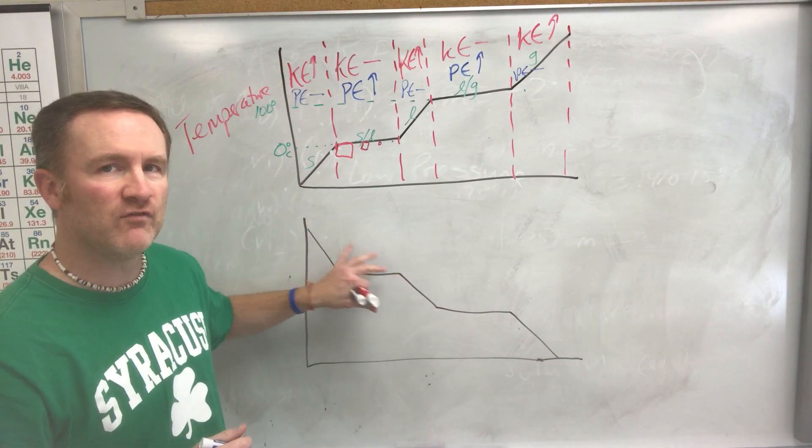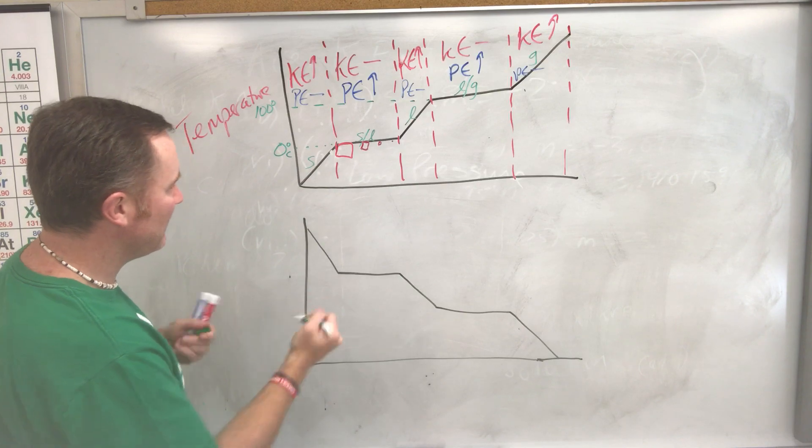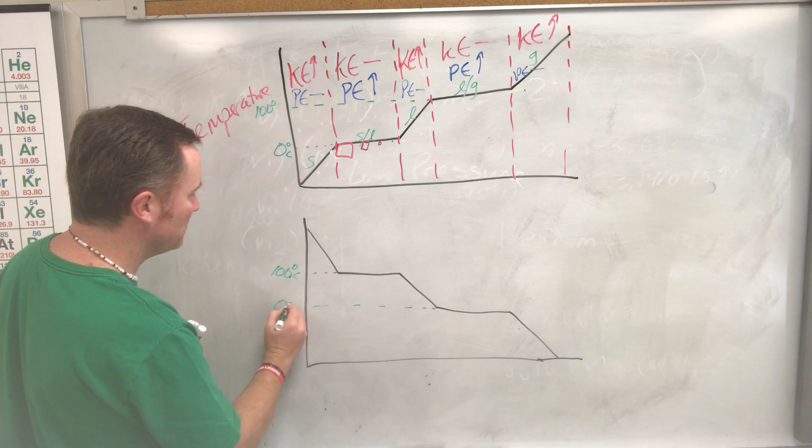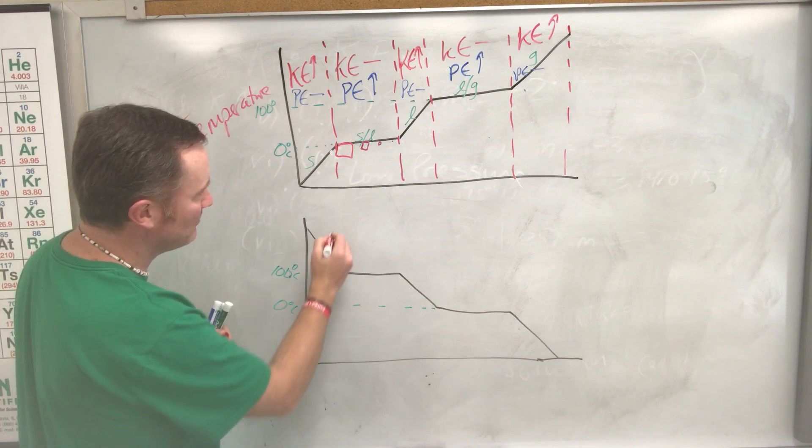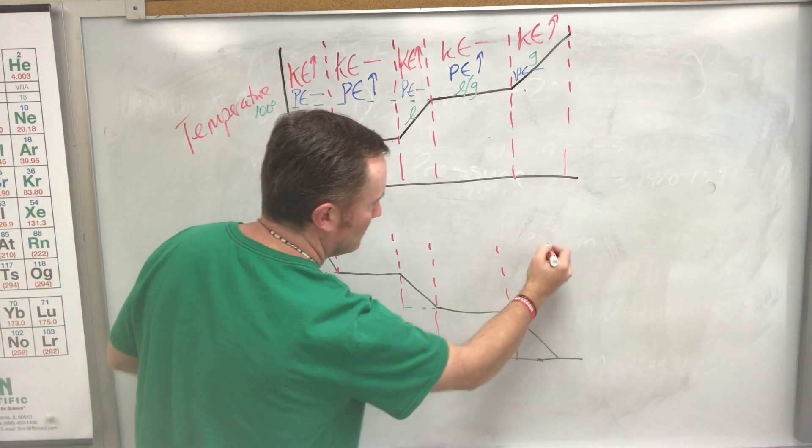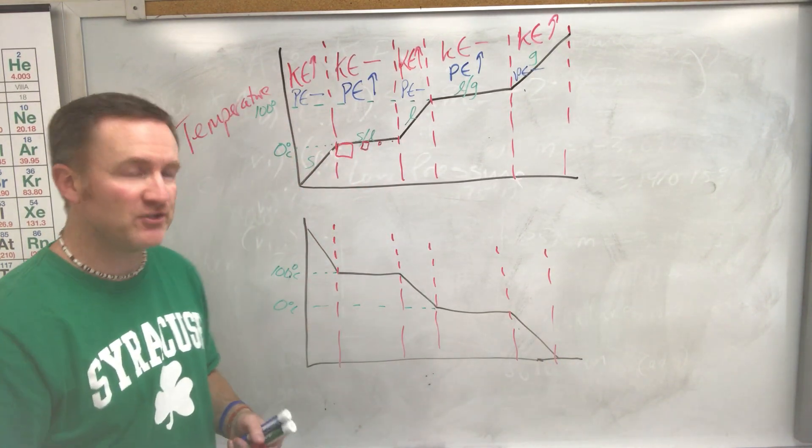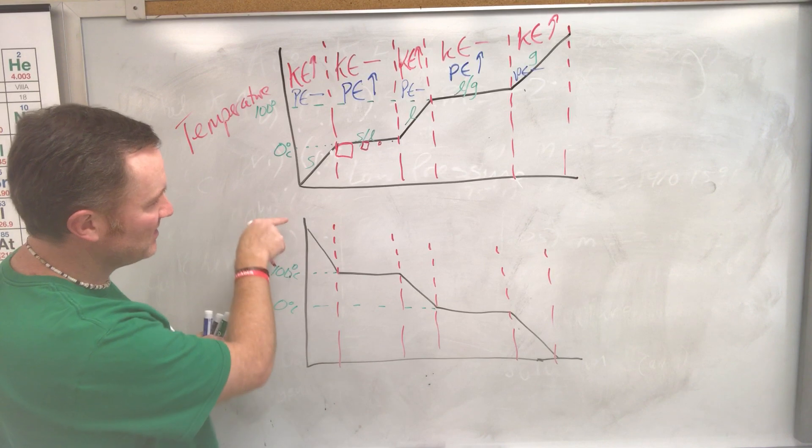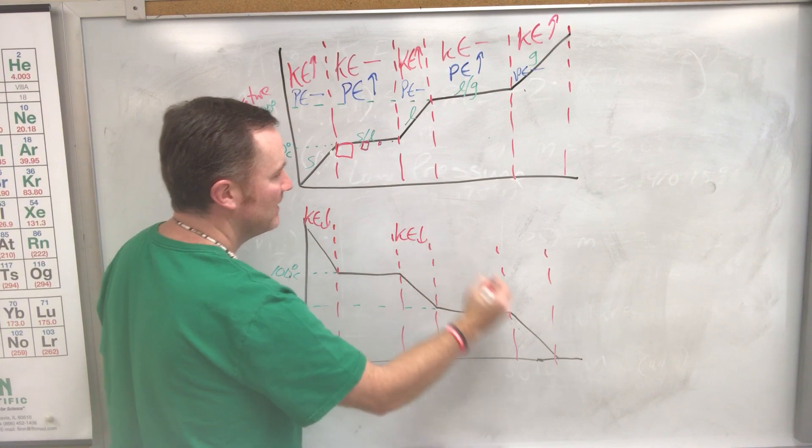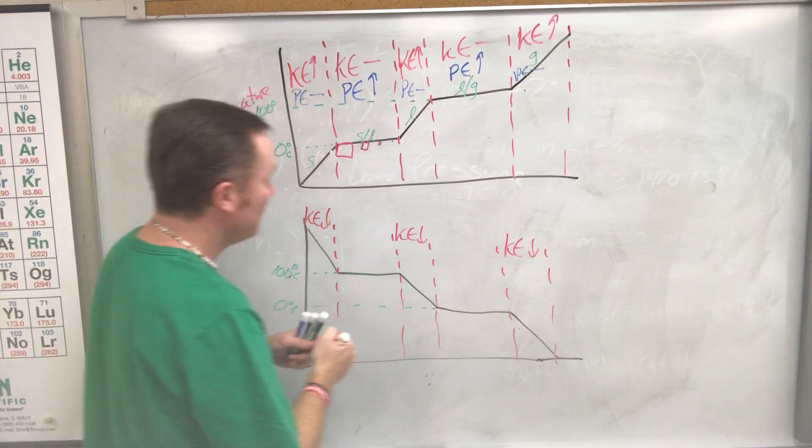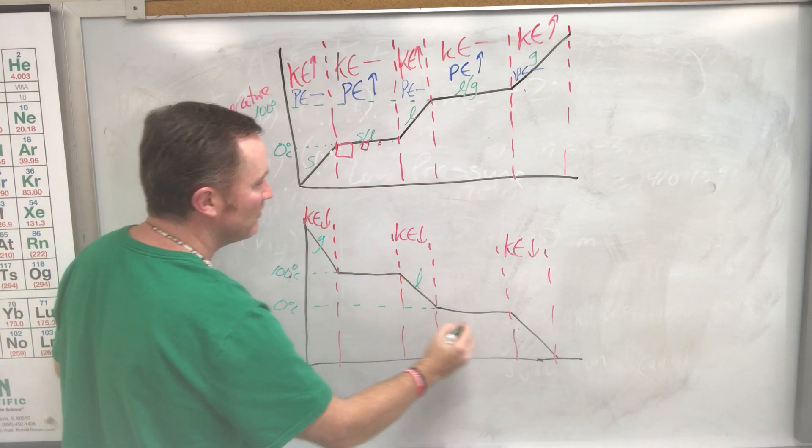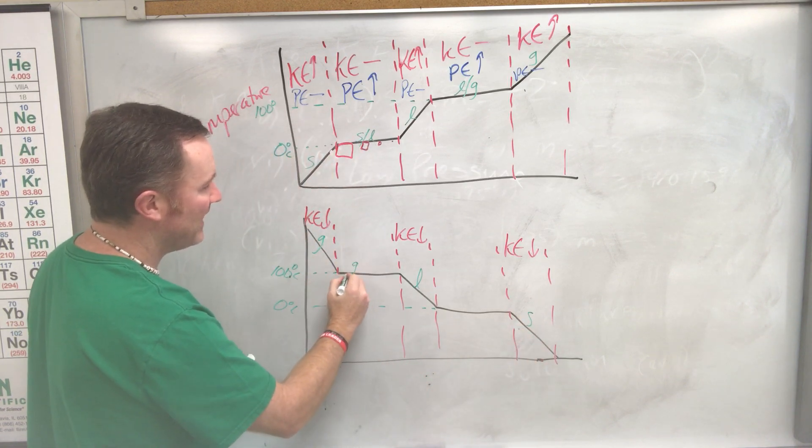Now the opposite is true for a cooling curve. This would be the same exact temperatures just going backwards. This could be 100 degrees Celsius, this could be our zero degrees point. If we break this down into different sections or divisions, we can determine what's going on with the kinetic energy and potential energy. Now because this is a decrease, because the temperature's going down, kinetic energy goes down. Kinetic energy goes down here as well, just like it does over here at the very bottom. Now just to throw in the values again going backwards, this would be my gas, this would be my liquid, and this would be my solid phase.